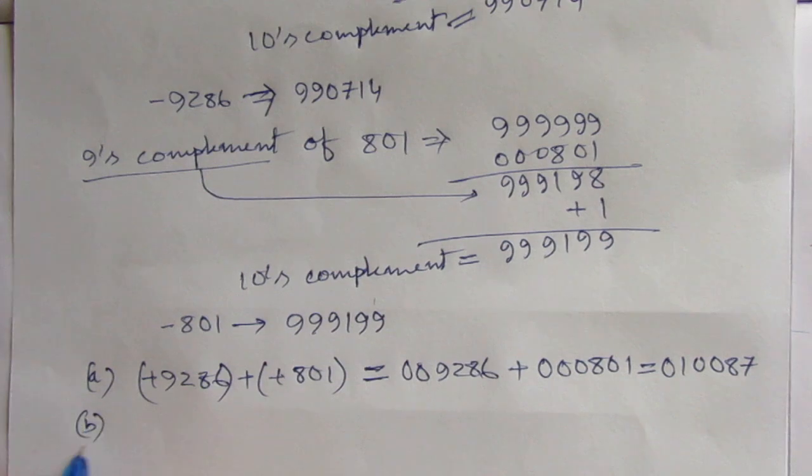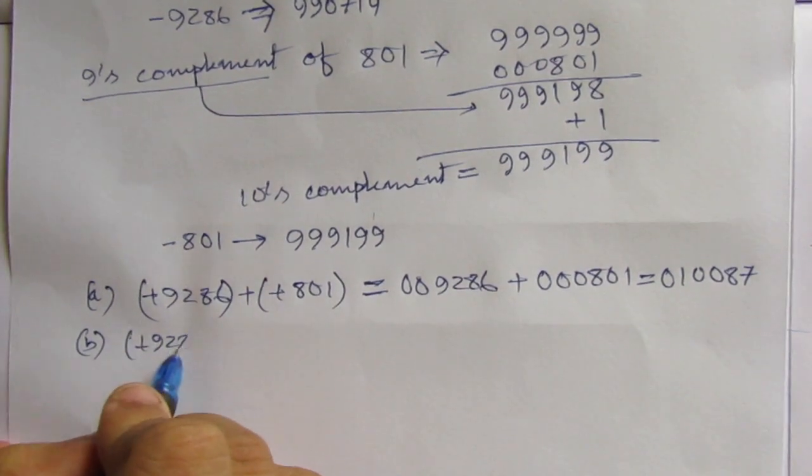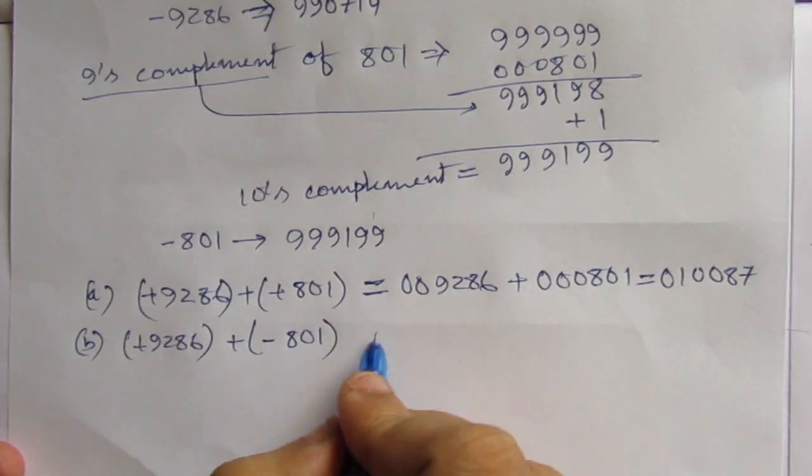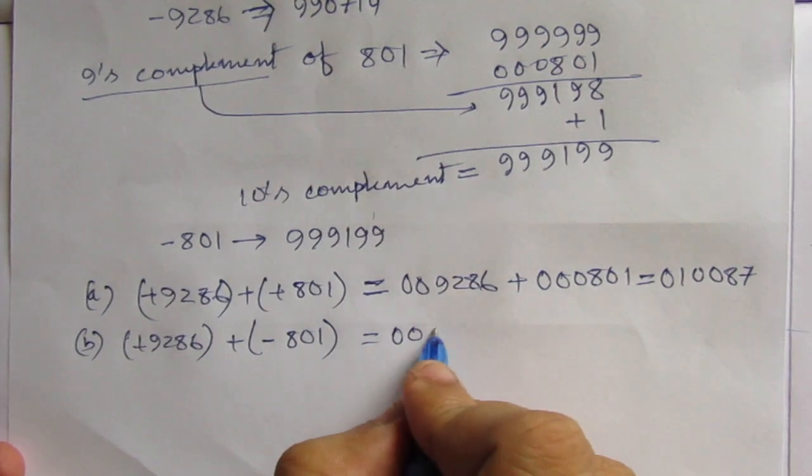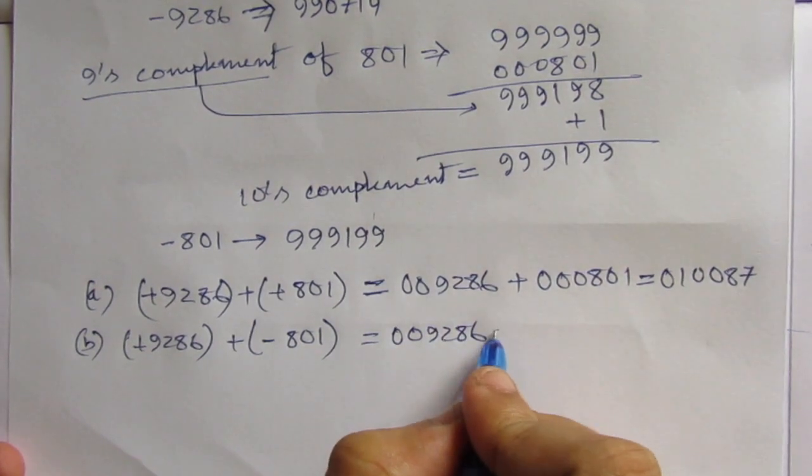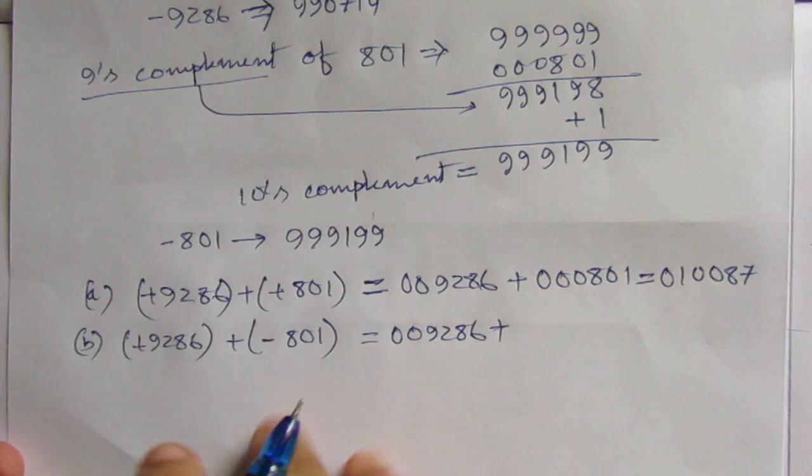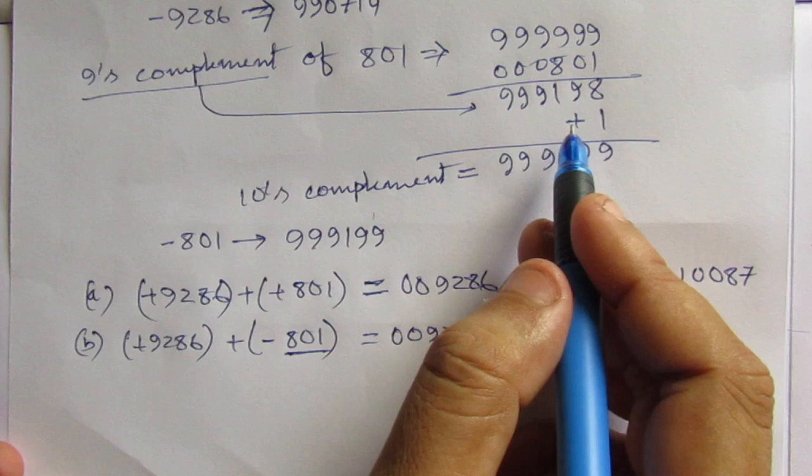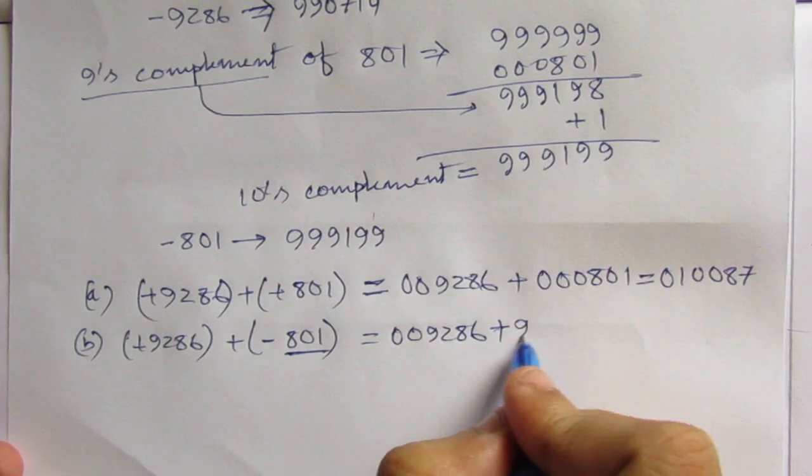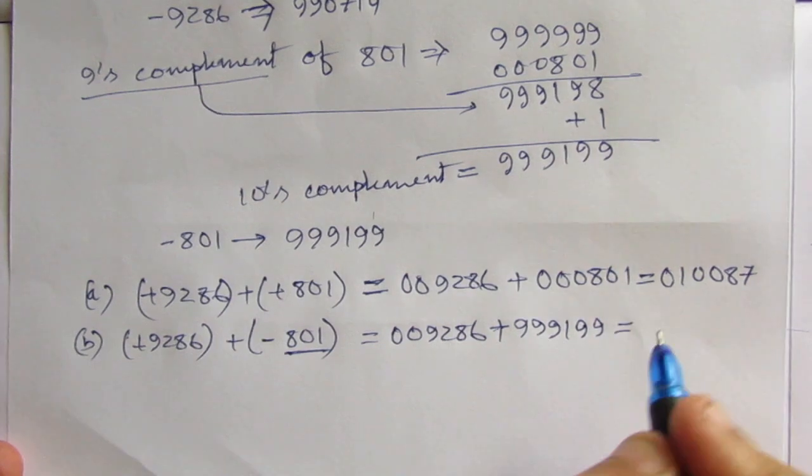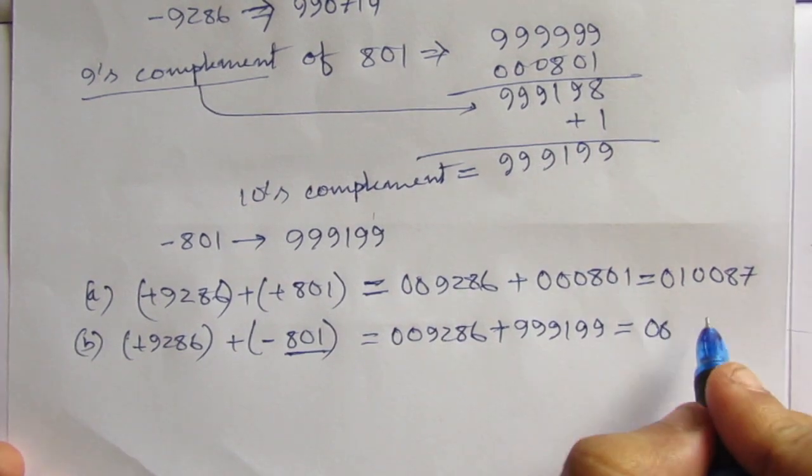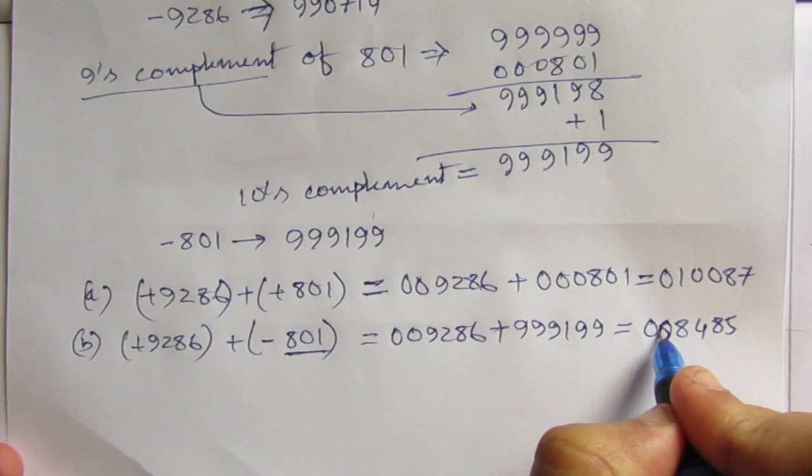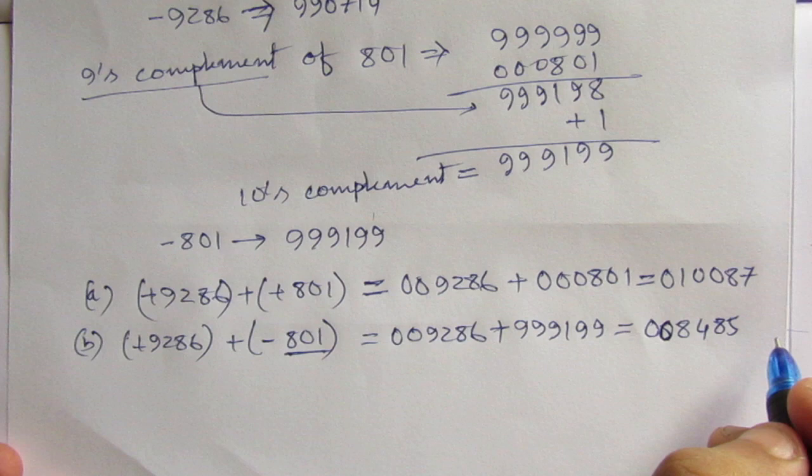Similarly, for B, we will have plus 9, 2, 8, 6 plus minus 8, 0, 1. This will be same 0, 0, 9, 2, 8, 6 plus this minus 8, 0, 1 can be replaced with the 10's complement of this 8, 0, 1. The 10's complement of 8, 0, 1 is 9, 9, 9, 1, 9, 9. So, the answer will be 0, 0, 8, 4, 8, 5. Here, we have discarded the end carry. 0, 0, 8, 4, 8, 5. This is the answer.